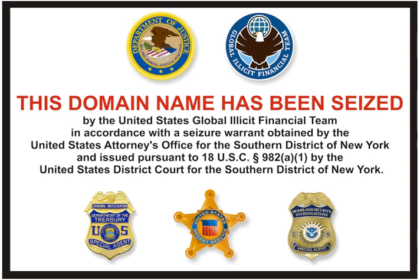A domain name consists of one or more parts, technically called labels, that are conventionally concatenated and delimited by dots, such as example.com. The right-most label conveys the top-level domain; for example, the domain name www.example.com belongs to the top-level domain com.